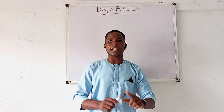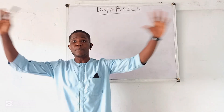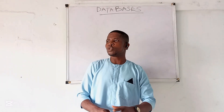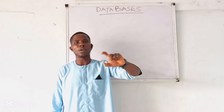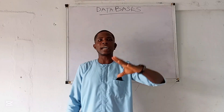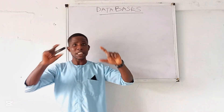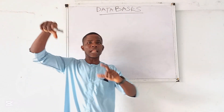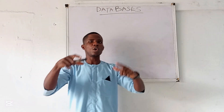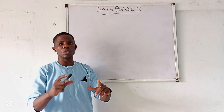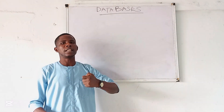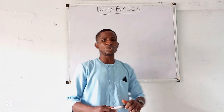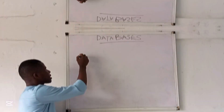I want you to visualize it as going to a library — a library where you have millions of books and you just want to search for a specific book, like 'Rich Dad Poor Dad' by Robert. That book is like a piece of data. The library is like a database where you store that data, and you as a user go there to retrieve it.